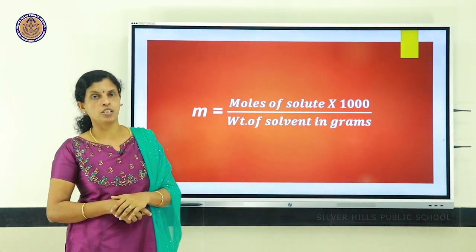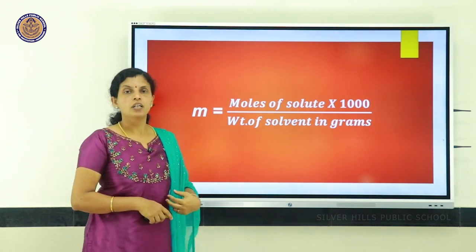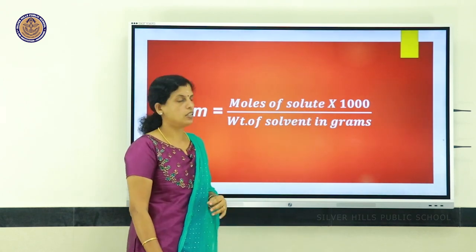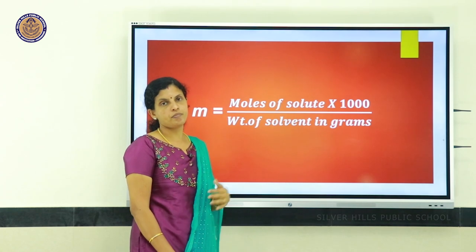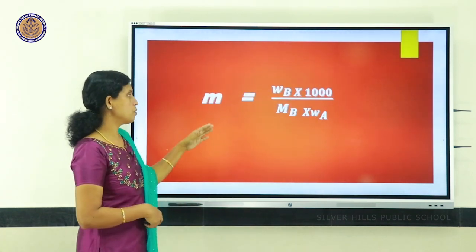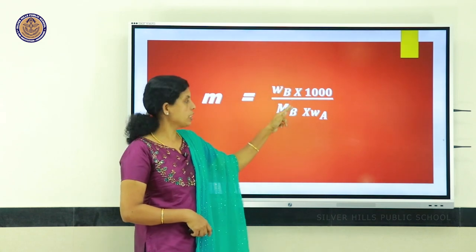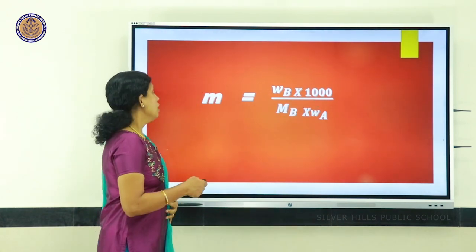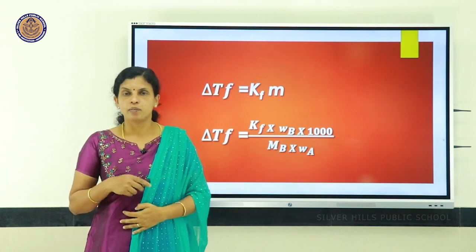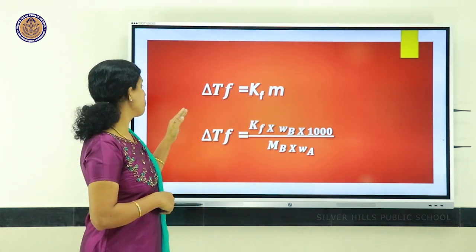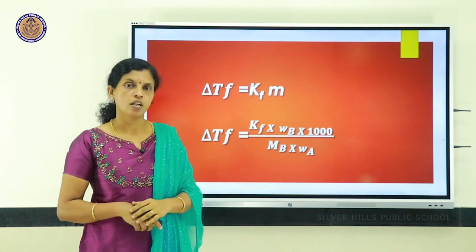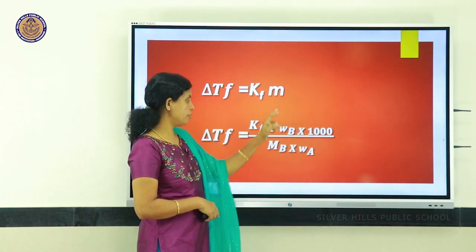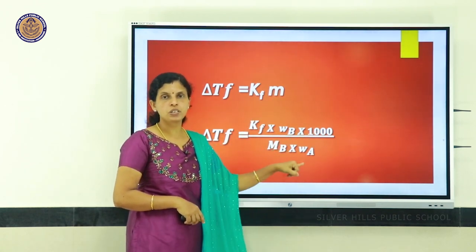According to the molality equation, molality equals number of moles of solute divided by weight of solvent in grams, multiplied by 1000. Number of moles equals Wb/Mb, so molality = (Wb/Mb) × (1000/Wa). Substituting into ΔTf = Kf × m gives: ΔTf = Kf × (Wb/Mb) × (1000/Wa).